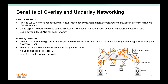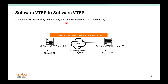The failure of a single link, one spine or one leaf, should not impact the rest of the fabric. So with a Layer 3 fabric, customers can get rid of Spanning Tree and achieve a loop-free multi-pathing network. Let's take a look at a few VXLAN VTEP use cases in the next few slides.